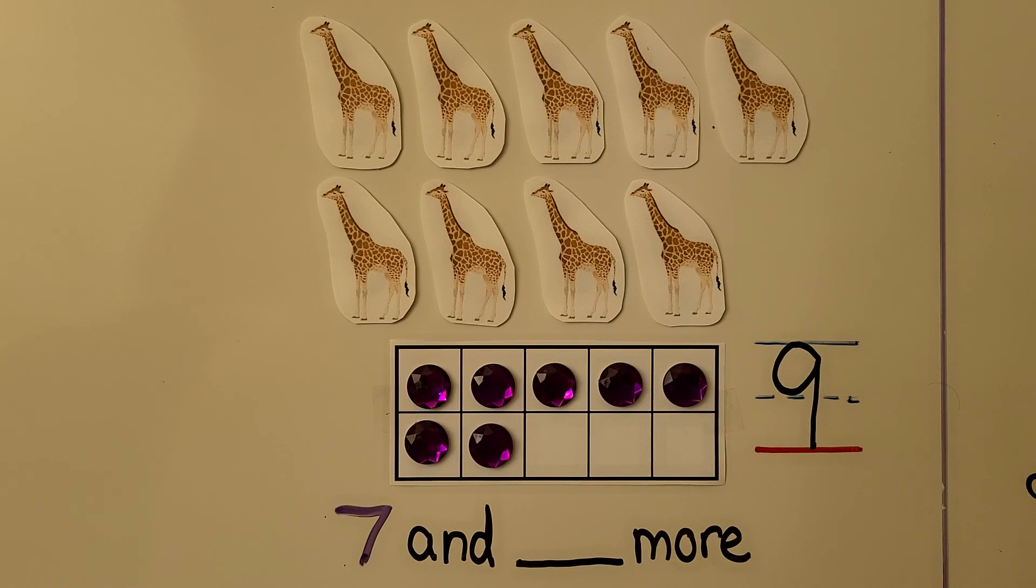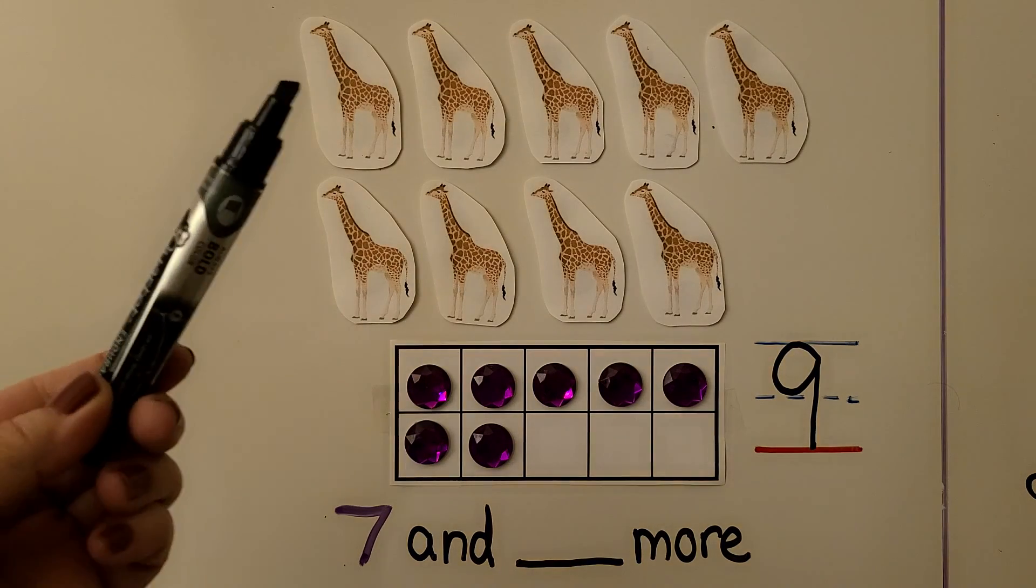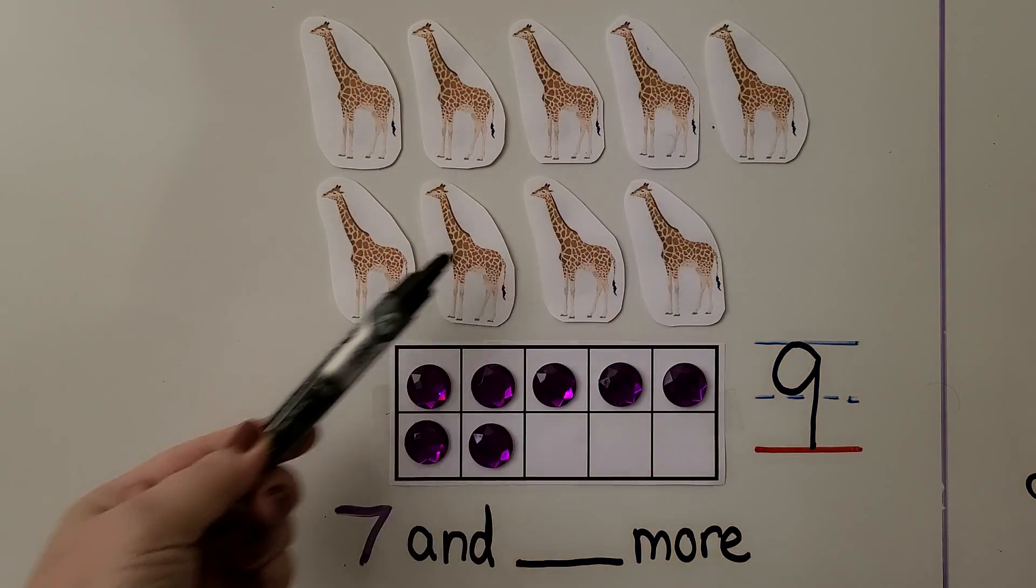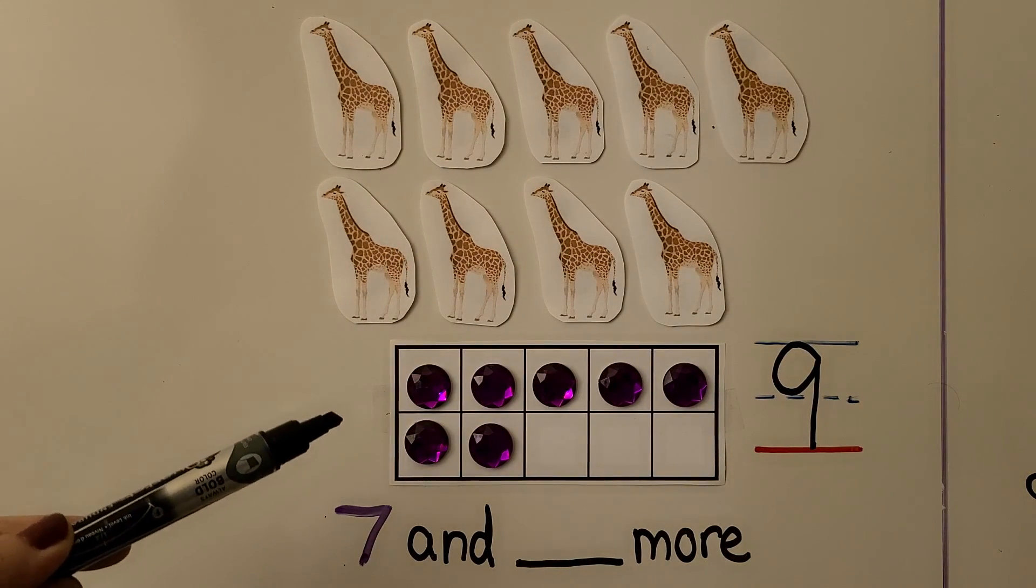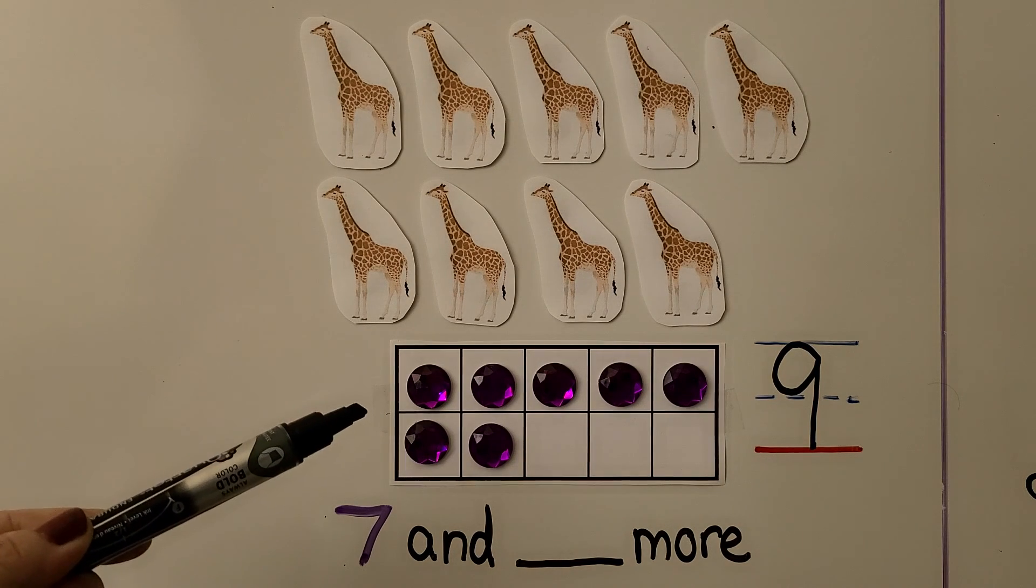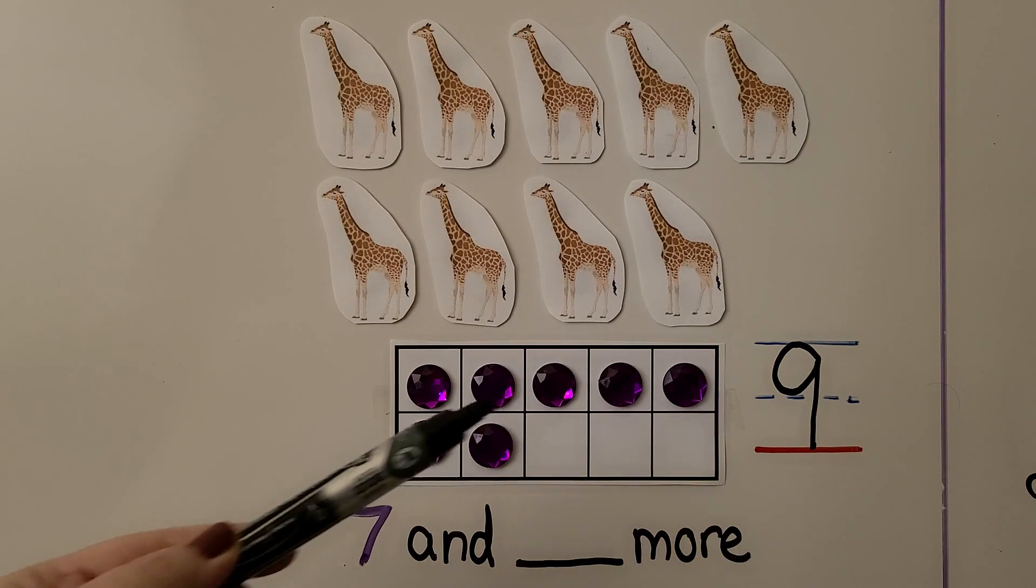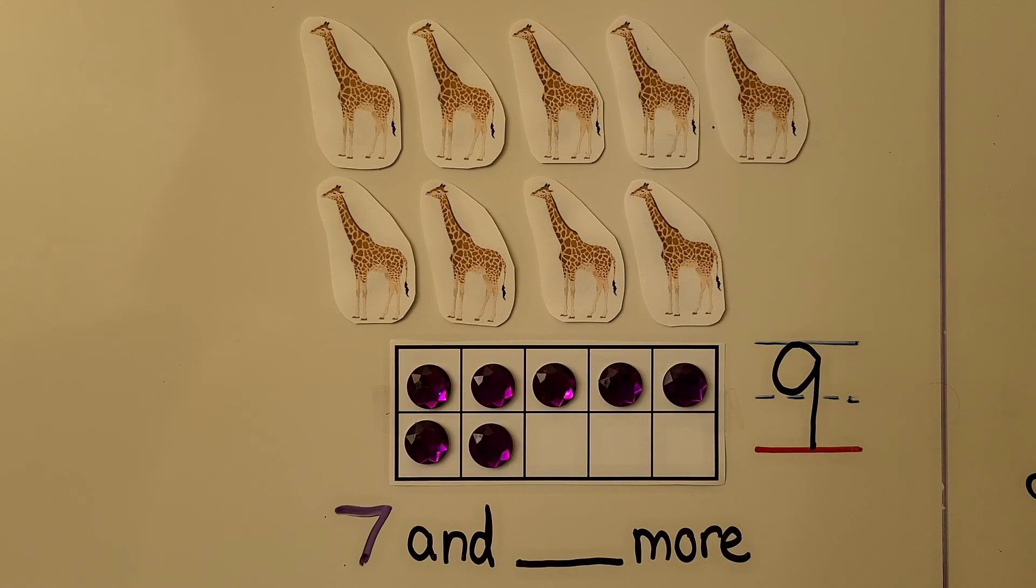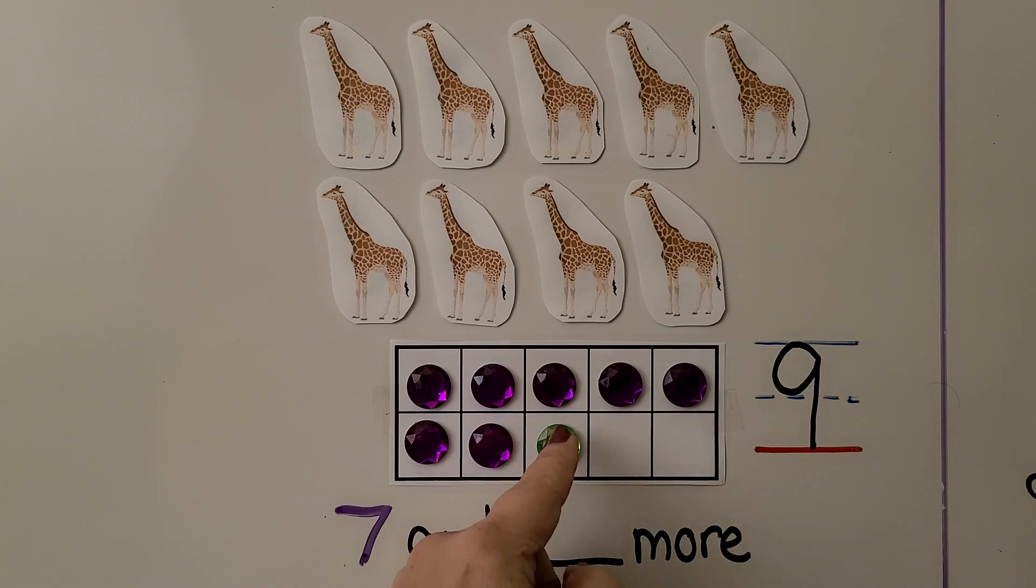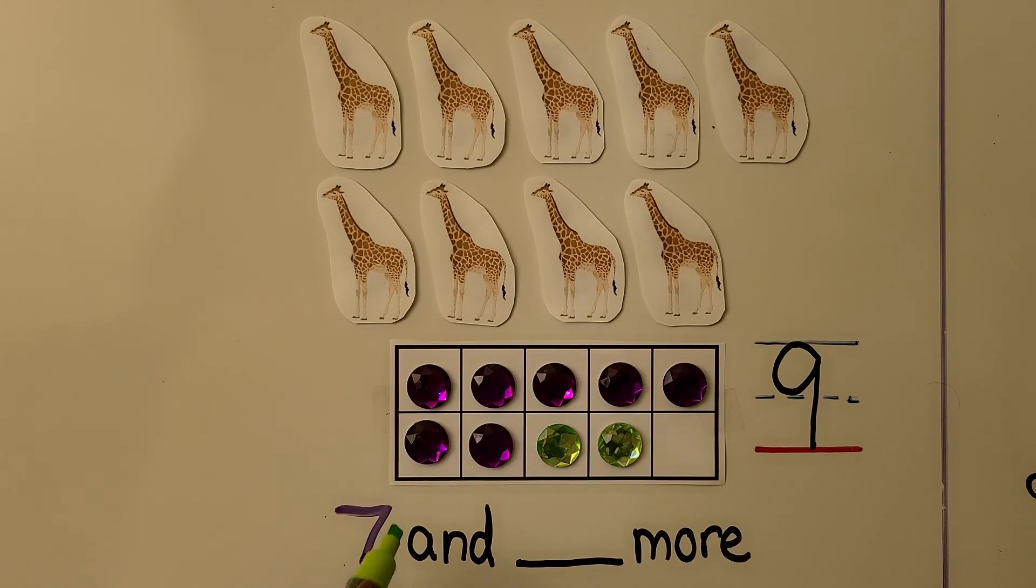Emma saw 9 giraffes: 1, 2, 3, 4, 5, 6, 7, 8, 9. How many more counters are needed in this 10 frame to show 9? We have 5, 6, 7. How many more counters do we need to put here so that it will show 9? 7, 8, 9. If you said 2, you're right. We had 7, and 2 more make 9.